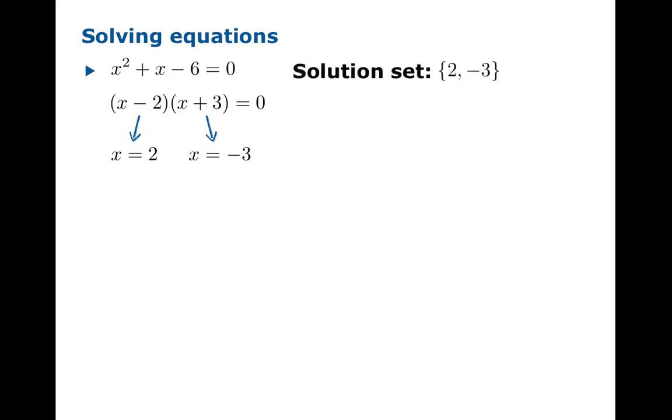We could assemble these into a so-called solution set, or we could plot the solutions on the number line. So there's three points, negative 3 and 2 are the two solutions to this equation.